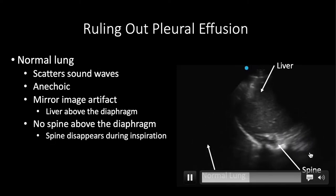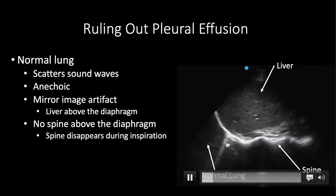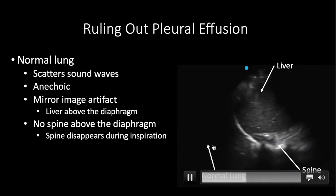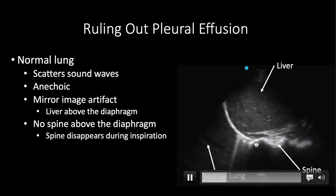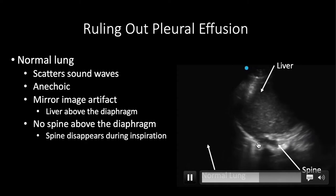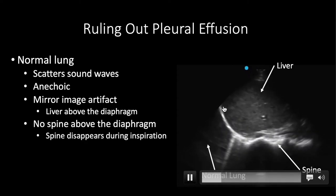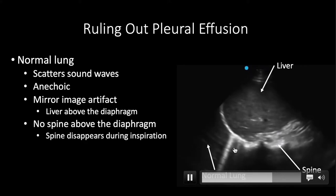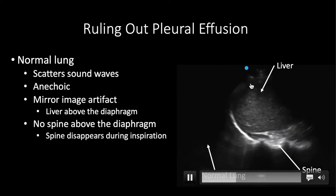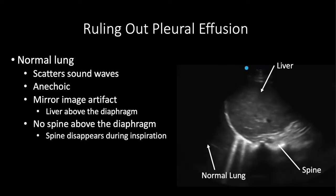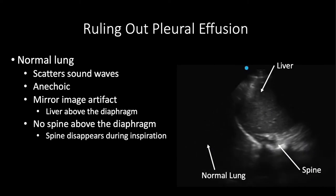The key is identifying the spine and realizing it never continues above the diaphragm. As the patient breathes in, the diaphragm comes down and the spine disappears. The ultrasound waves entering the lung don't hit the spine and bounce back because of air scattering. So even though there truly is spine above the diaphragm, normal lung makes the spine disappear above it.